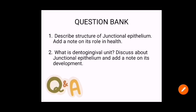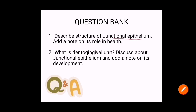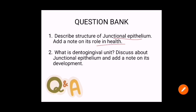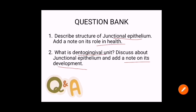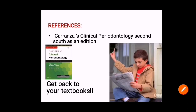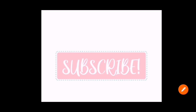We have come to the end of this important topic on junctional epithelium. Previous year exam questions include: 'Describe the structure of junctional epithelium' and 'Add a note on its role in health.' We also covered the dento-gingival unit, how junctional epithelium prevents pathogenic bacteria from entering the gingival sulcus, and its development from the confluence of oral epithelium and reduced enamel epithelium. References are from Karanza's Clinical Periodontology, 2nd South Asian Edition.